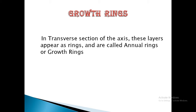In the tropical region, where there is an annual demarcation of growing and dormant periods, each layer represents the growth of one year. The width of the growth ring varies greatly and depends upon the rate of growth of the tree. In an unfavorable growing season, narrow rings are produced, and in favorable seasons, wide rings are formed.